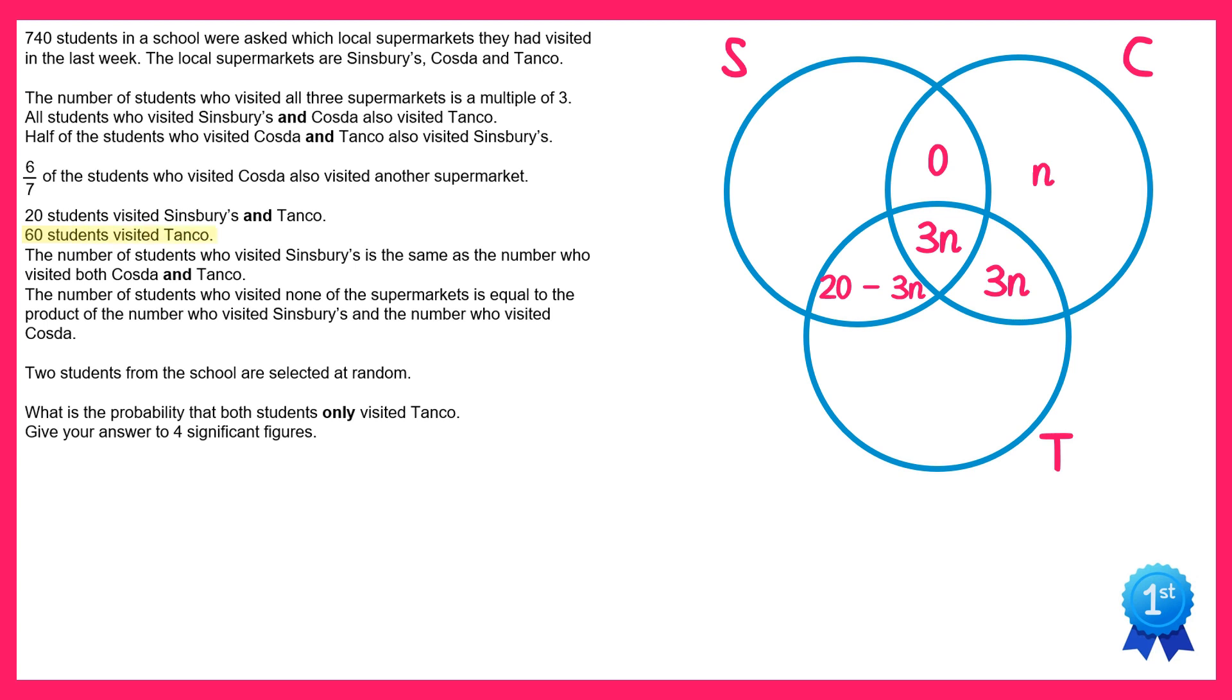Next we're told that 60 students visited Tanko. This means the whole of the Tanko circle must add up to make 60. Now we already have most of the parts of this circle, and if you add up those you get 20 plus 3n. So the remaining section must be 60 take away this, so 60 take away 20 take away 3n which is 40 take away 3n.